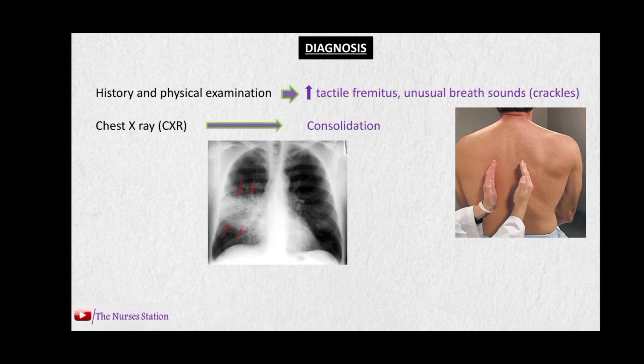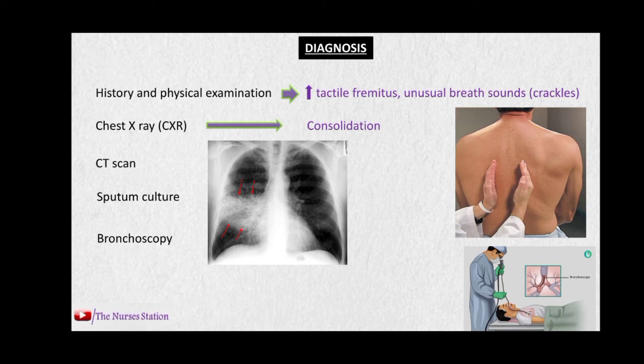We can take a chest X-ray, which shows regions of consolidation or fluid accumulation in the lungs. We can use CT scan, sputum culture to identify the causative agent, bronchoscopy to look into the airways, and oximetry and arterial blood gases to monitor gas levels in the blood.